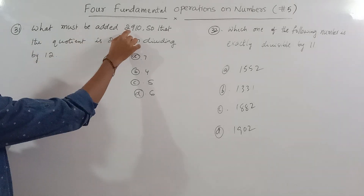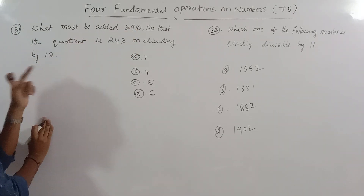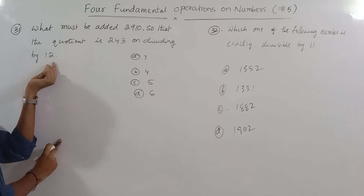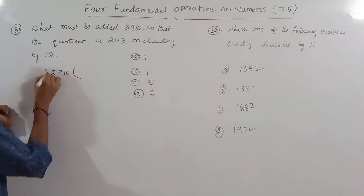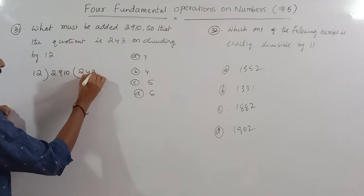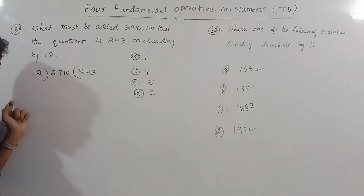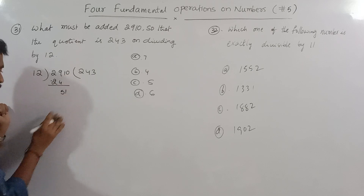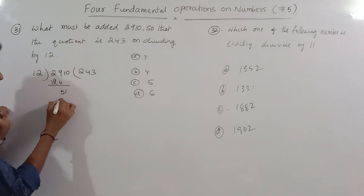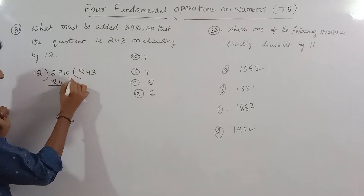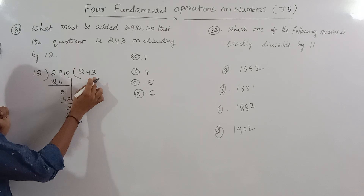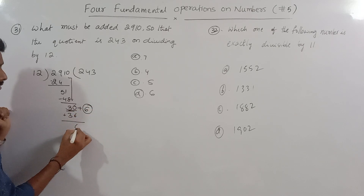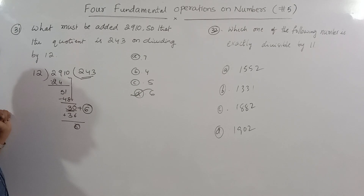What is the difference between 2910 and A? The quotient between 243 divided by 12 — if we take a measure of 182, we add 6 to the quotient. So we examine the quotient of 151 to 455.